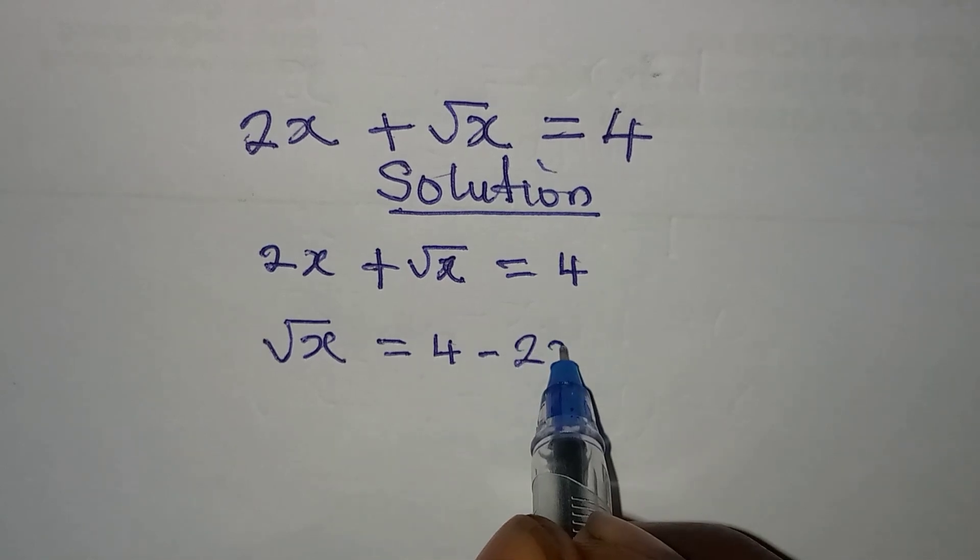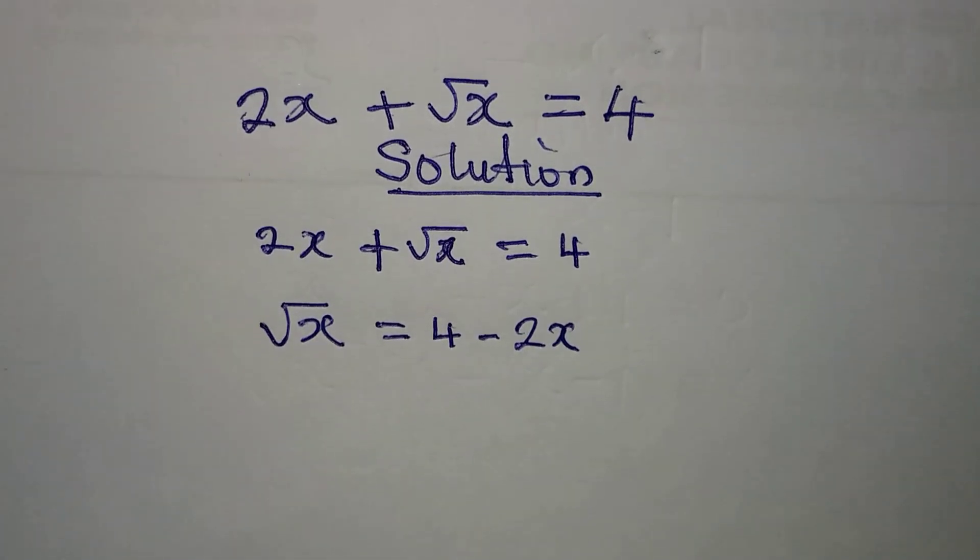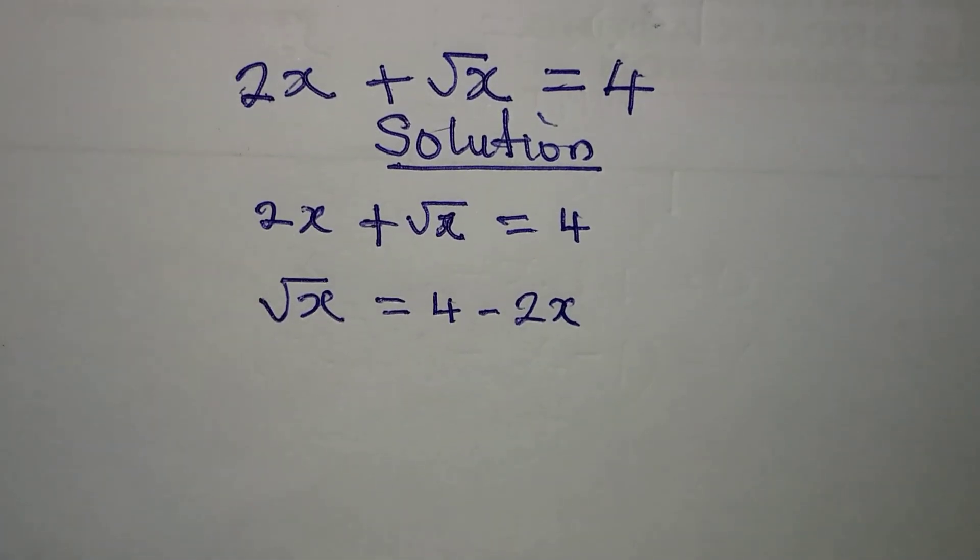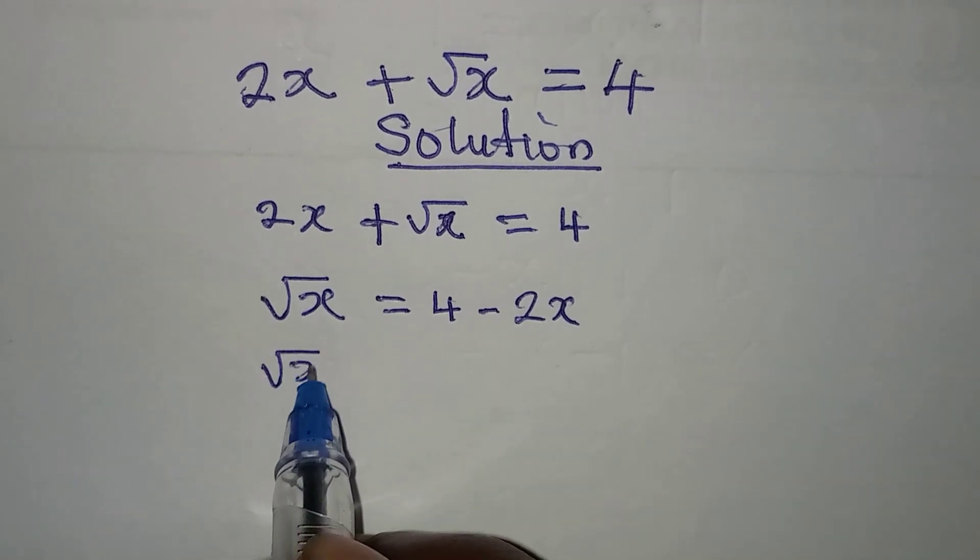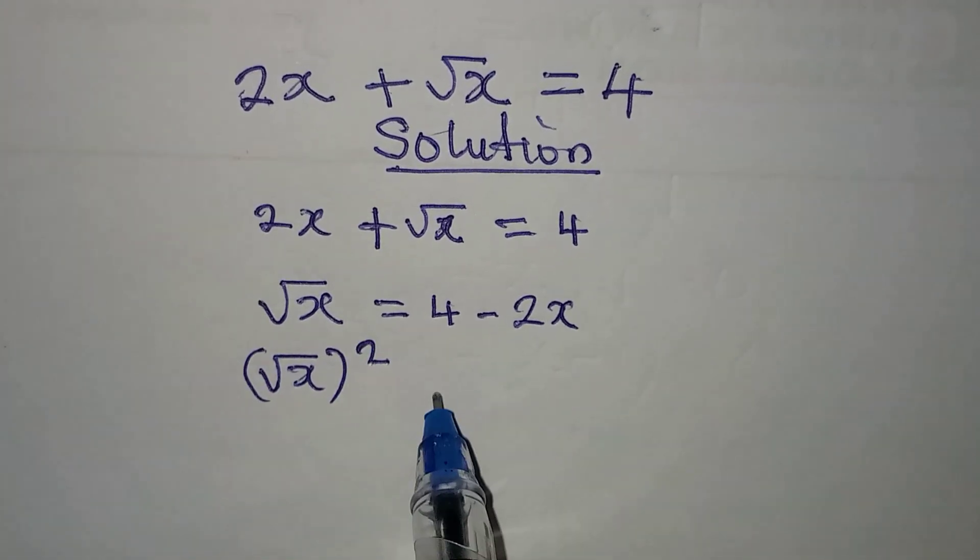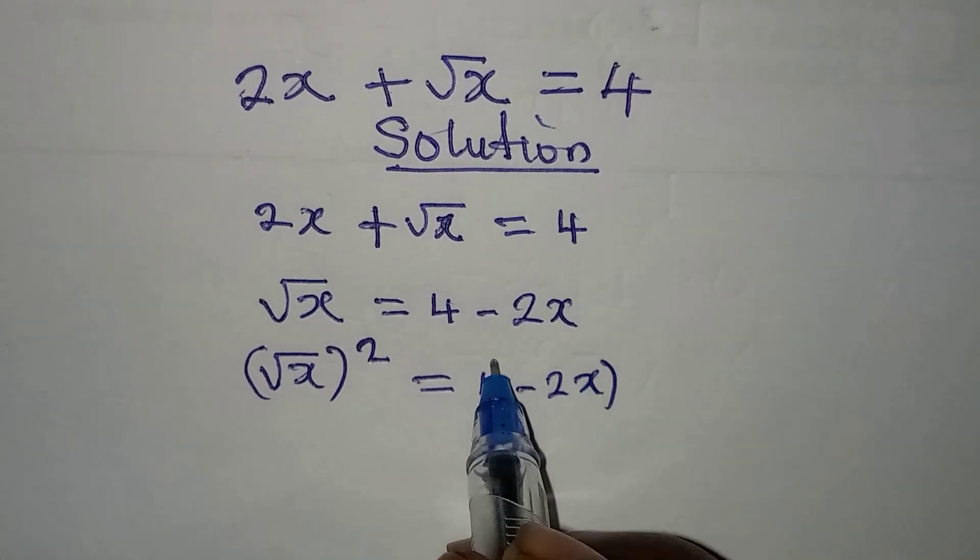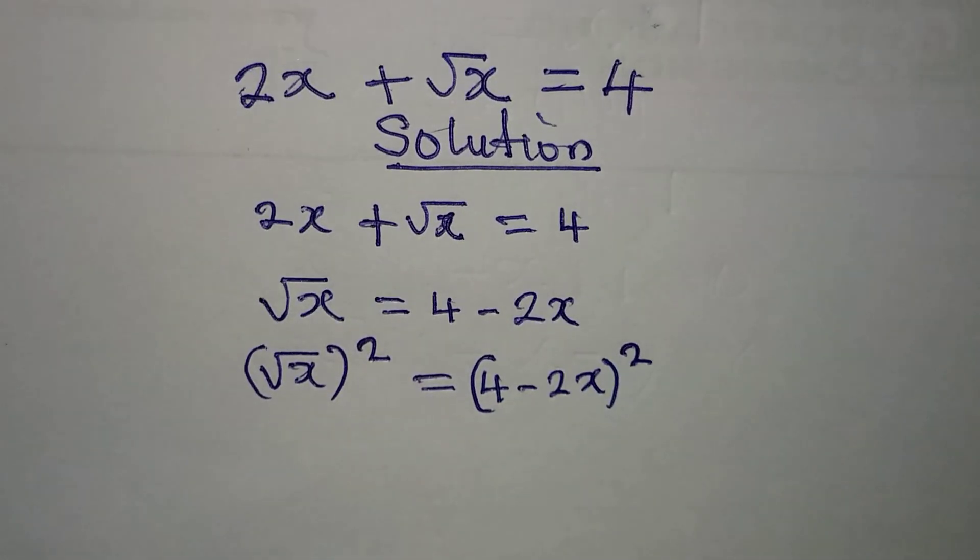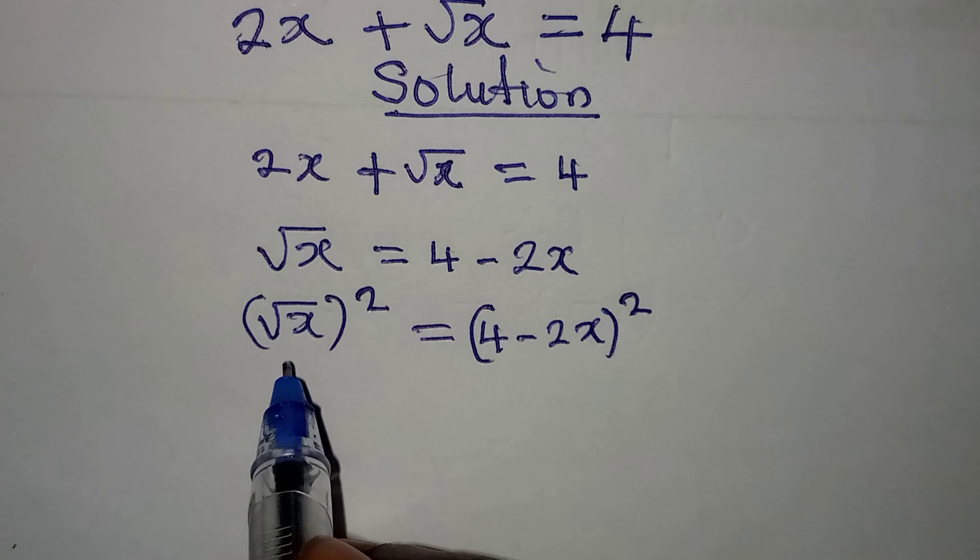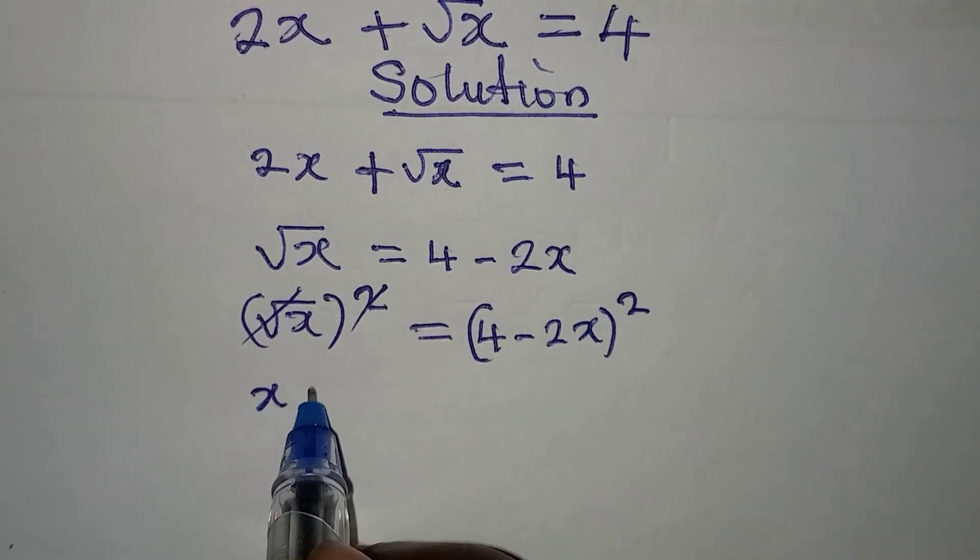Now the next thing is to square both sides, so we have (√x)² equal to (4 - 2x)². From here, this can cancel and our x will be equal to (4 - 2x)(4 - 2x).